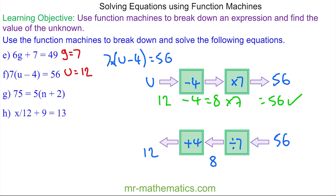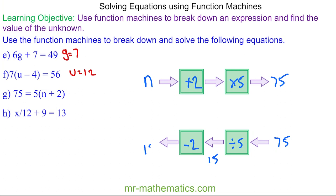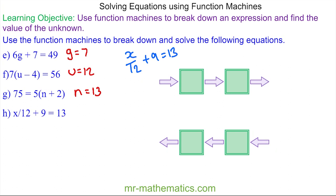Do you want to try and work out questions g and h? You can pause the video and resume it when you're ready. For question g, n goes in, we're adding 2, and then we're multiplying the result by 5 to get 75. Going the other way: 75 divided by 5, then take away 2. 75 divided by 5 is 15, and 15 take away 2 is 13, so n = 13.